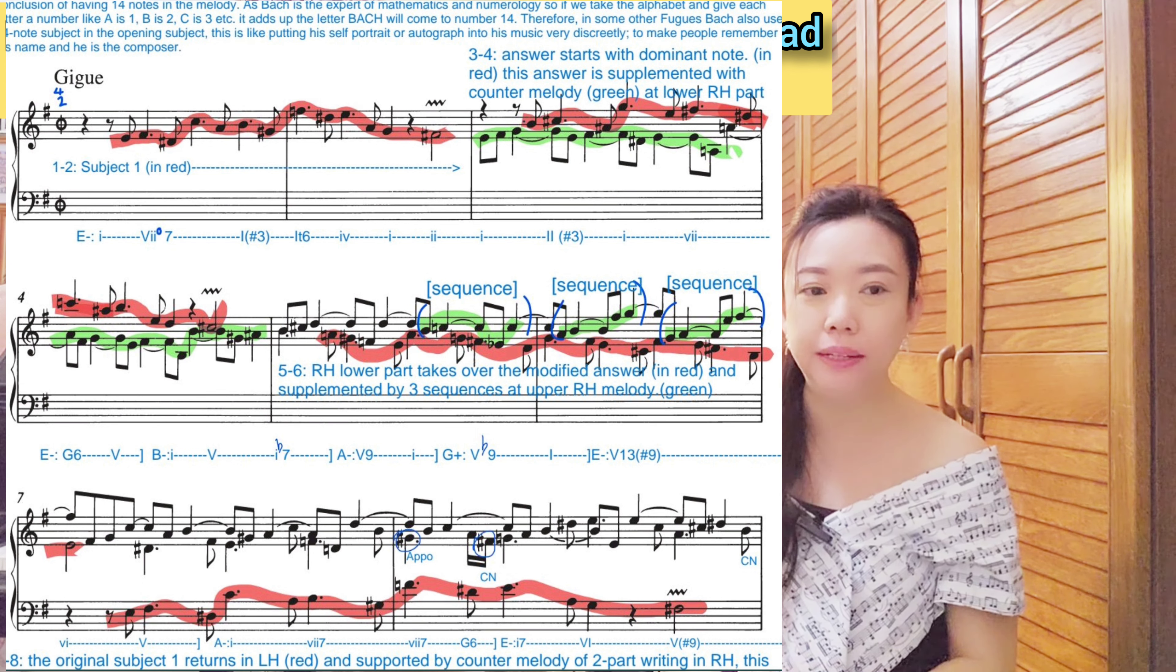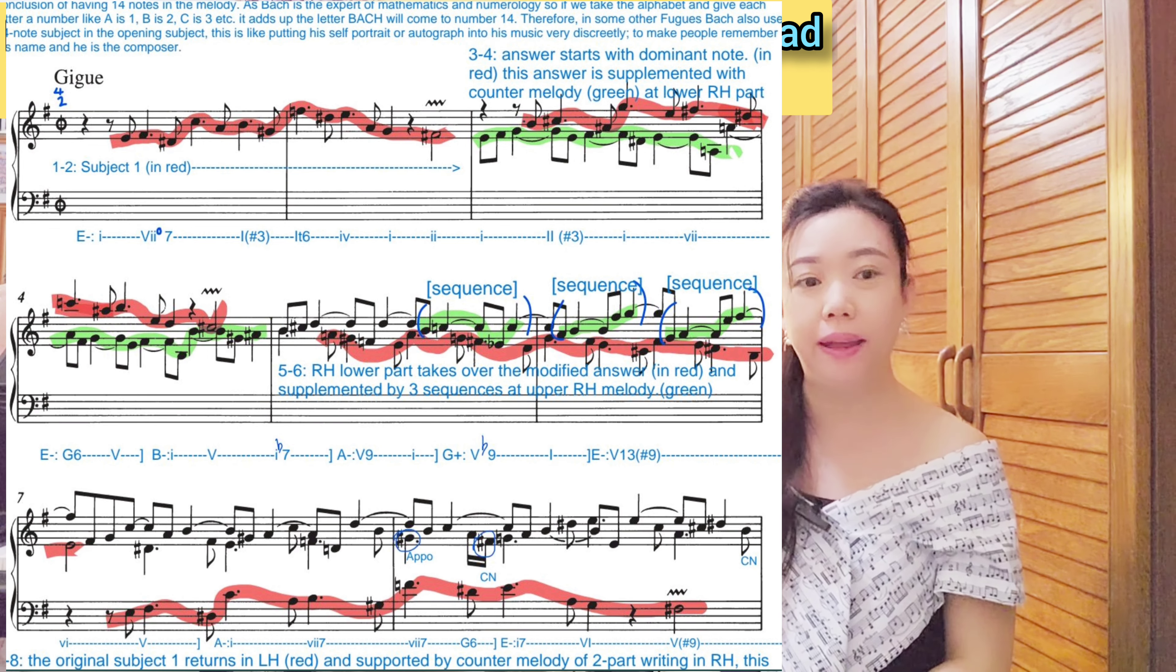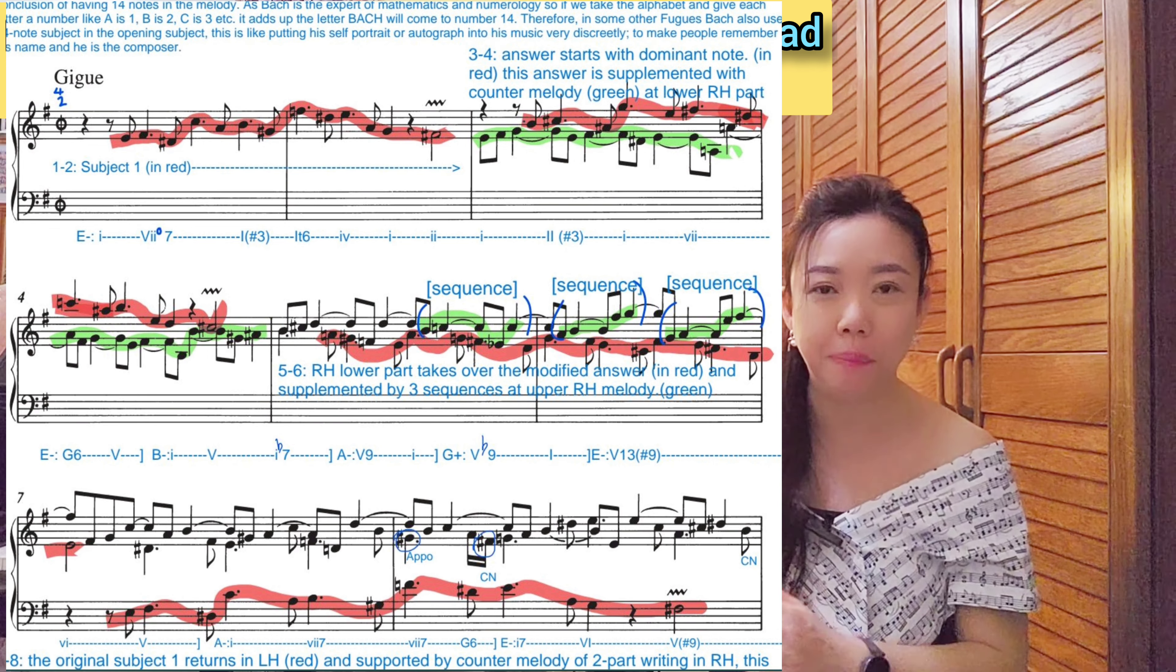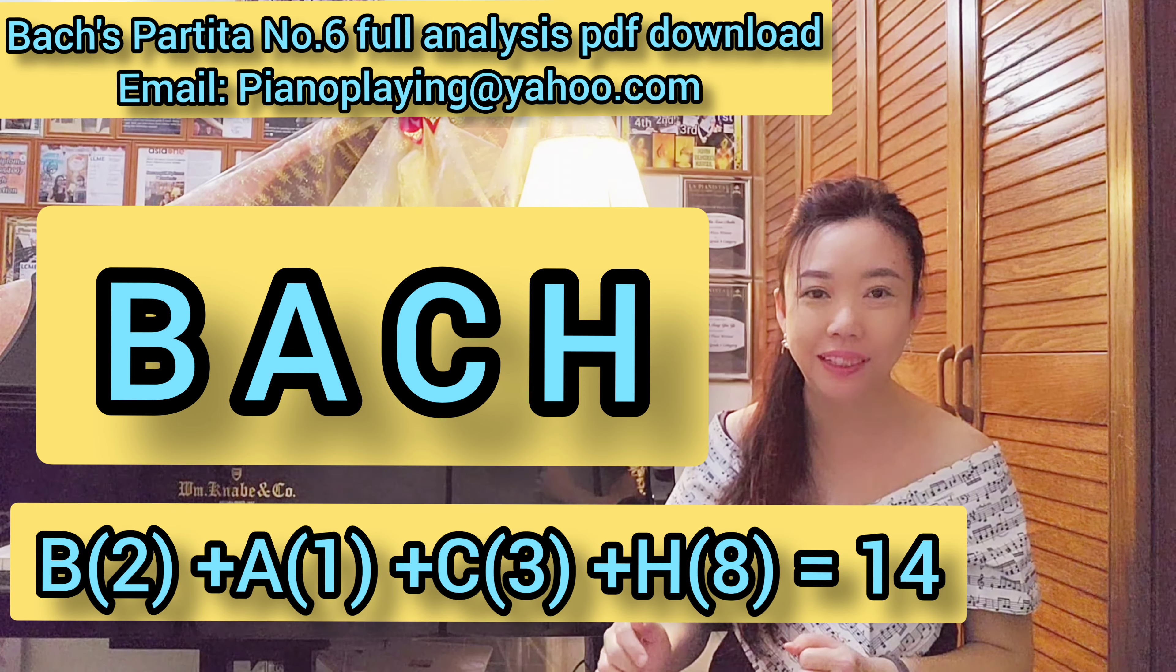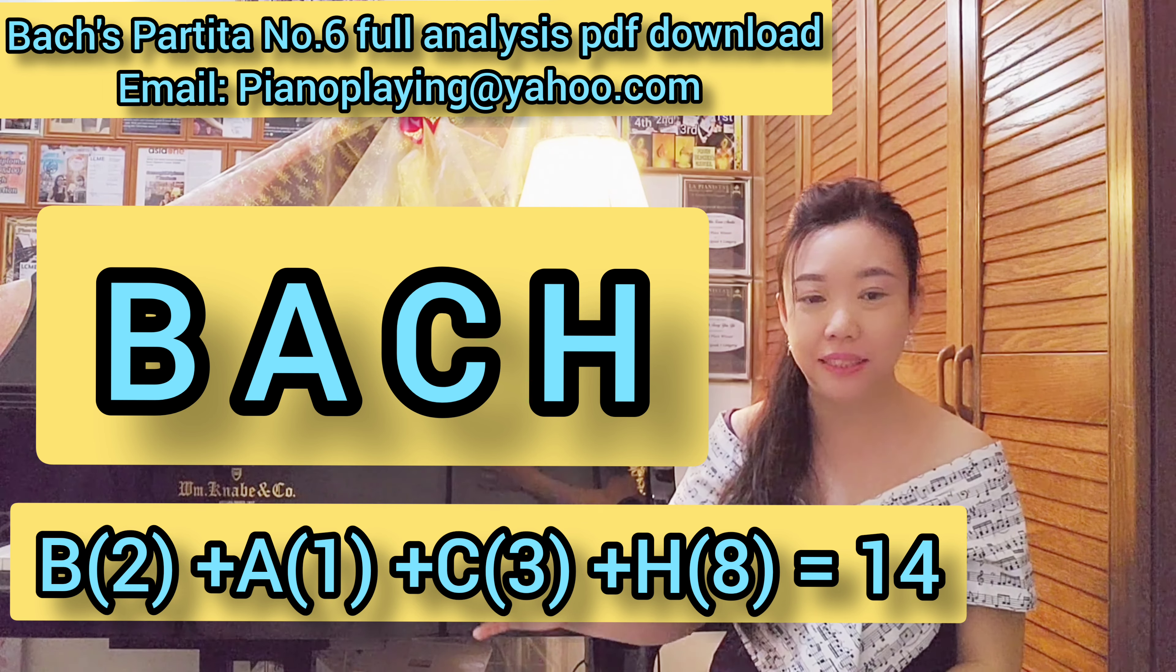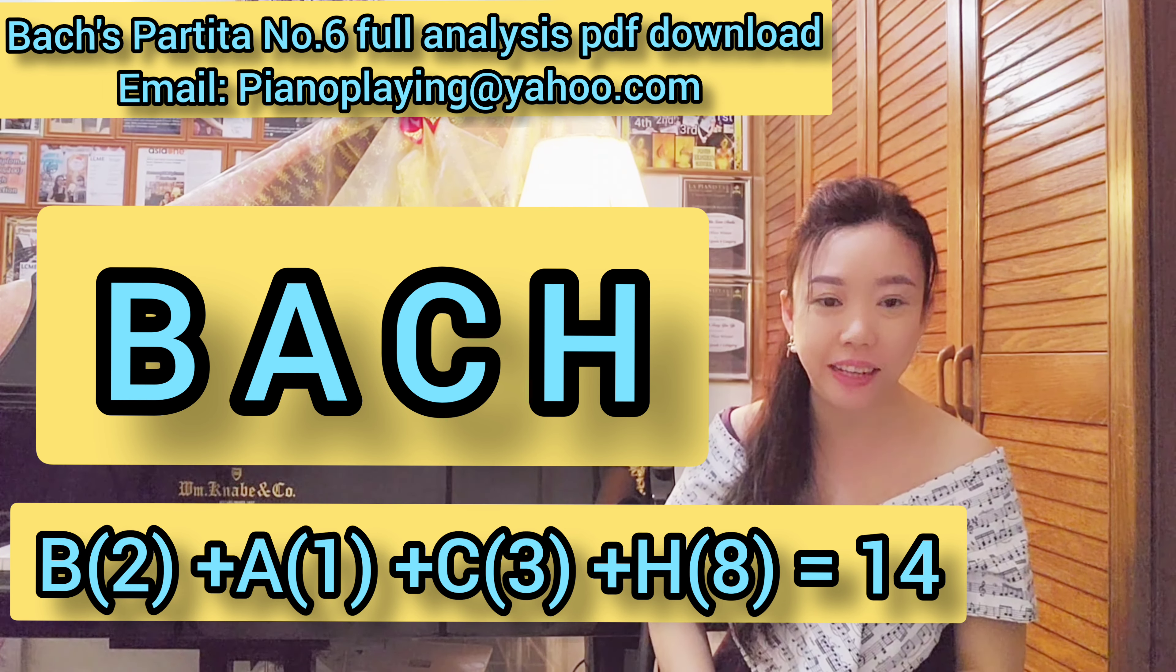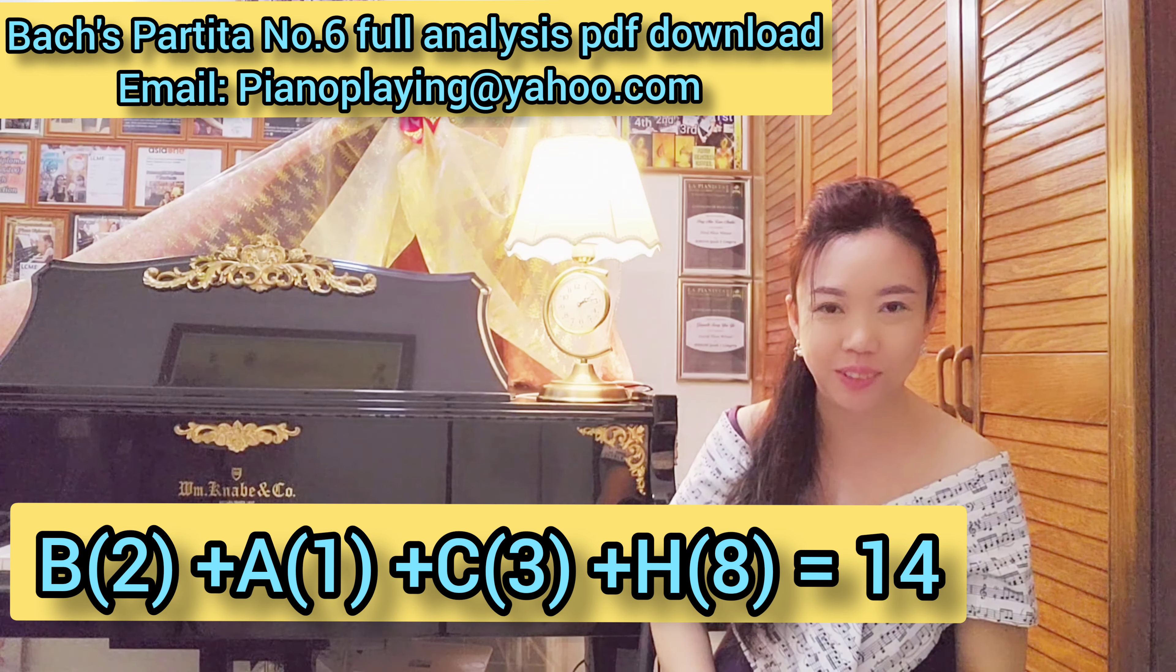But wait, when the second subject pops in, suddenly we get 14 notes. And here's where it gets crazy. If you take the letters of Bach, B, A, C, H, and turn them into numbers, like B equals 2, A equals 1, C equals 3, and H equals 8, you will get 14 also.